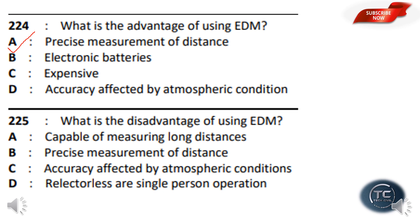What is the disadvantage of using EDM? The answer is option C — accuracy affected by atmospheric conditions is the disadvantage, while the ability to measure precisely is the advantage.